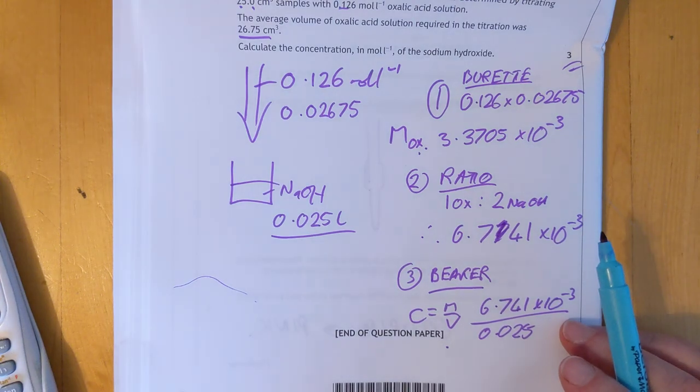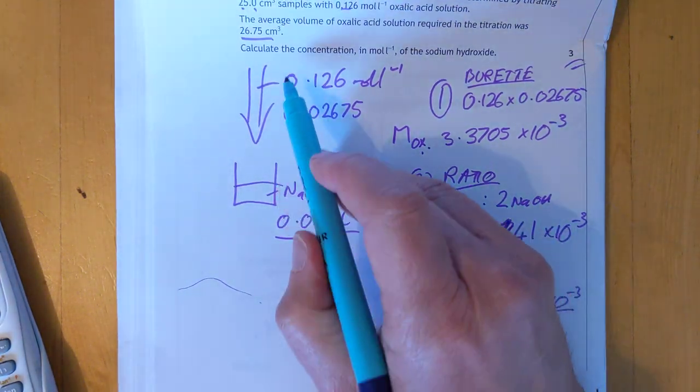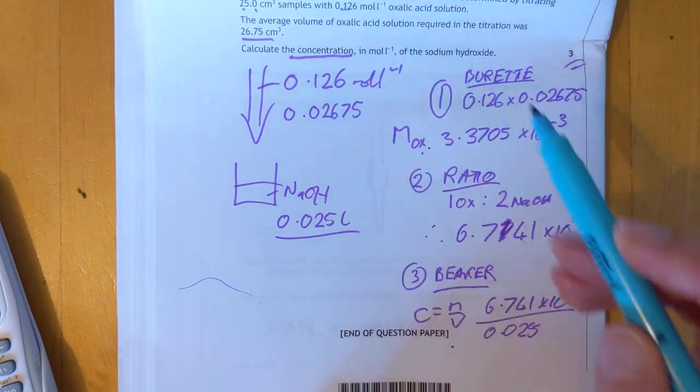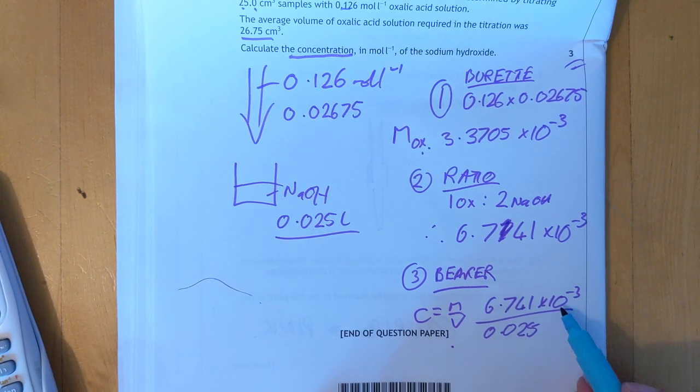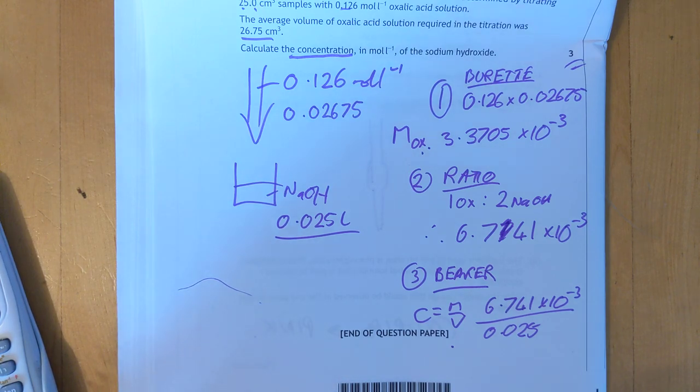And stage three. Ask. I usually say calculate whatever it is they're asking for. In this case it is truly just a concentration. So concentration is moles over volume. We know the moles. We know the volume. And the final answer therefore of the paper in fact is 0.02 divided by 0.025.